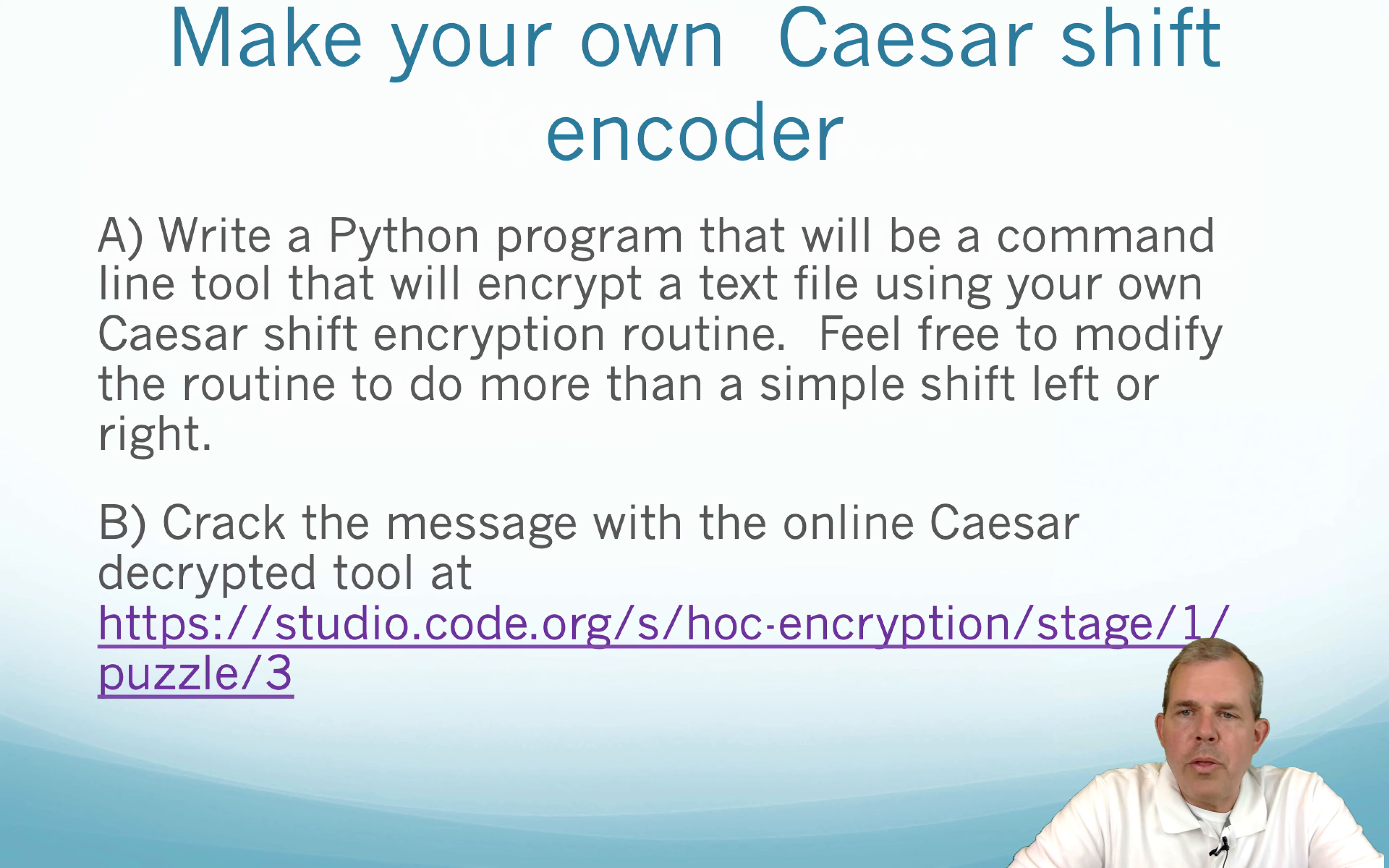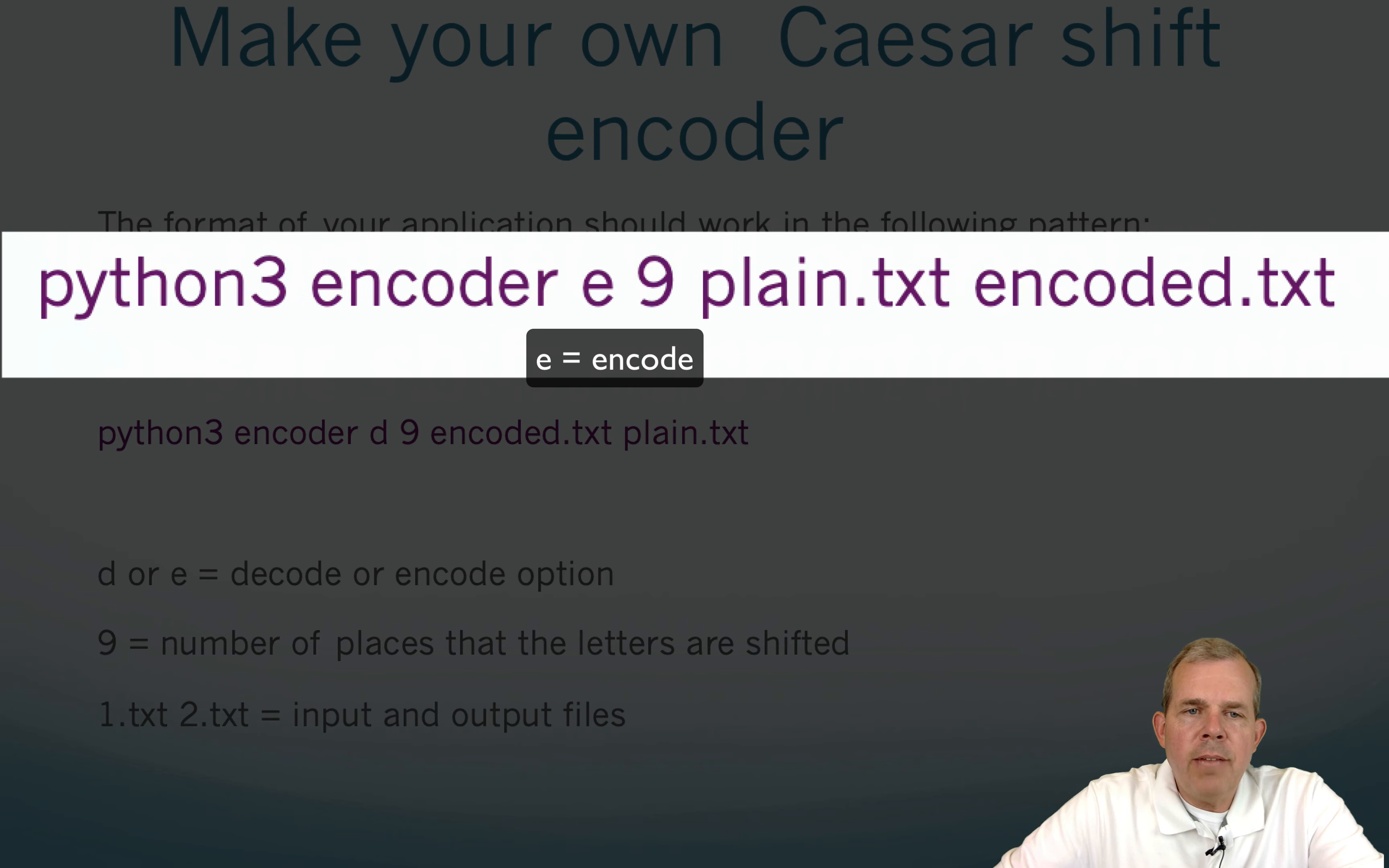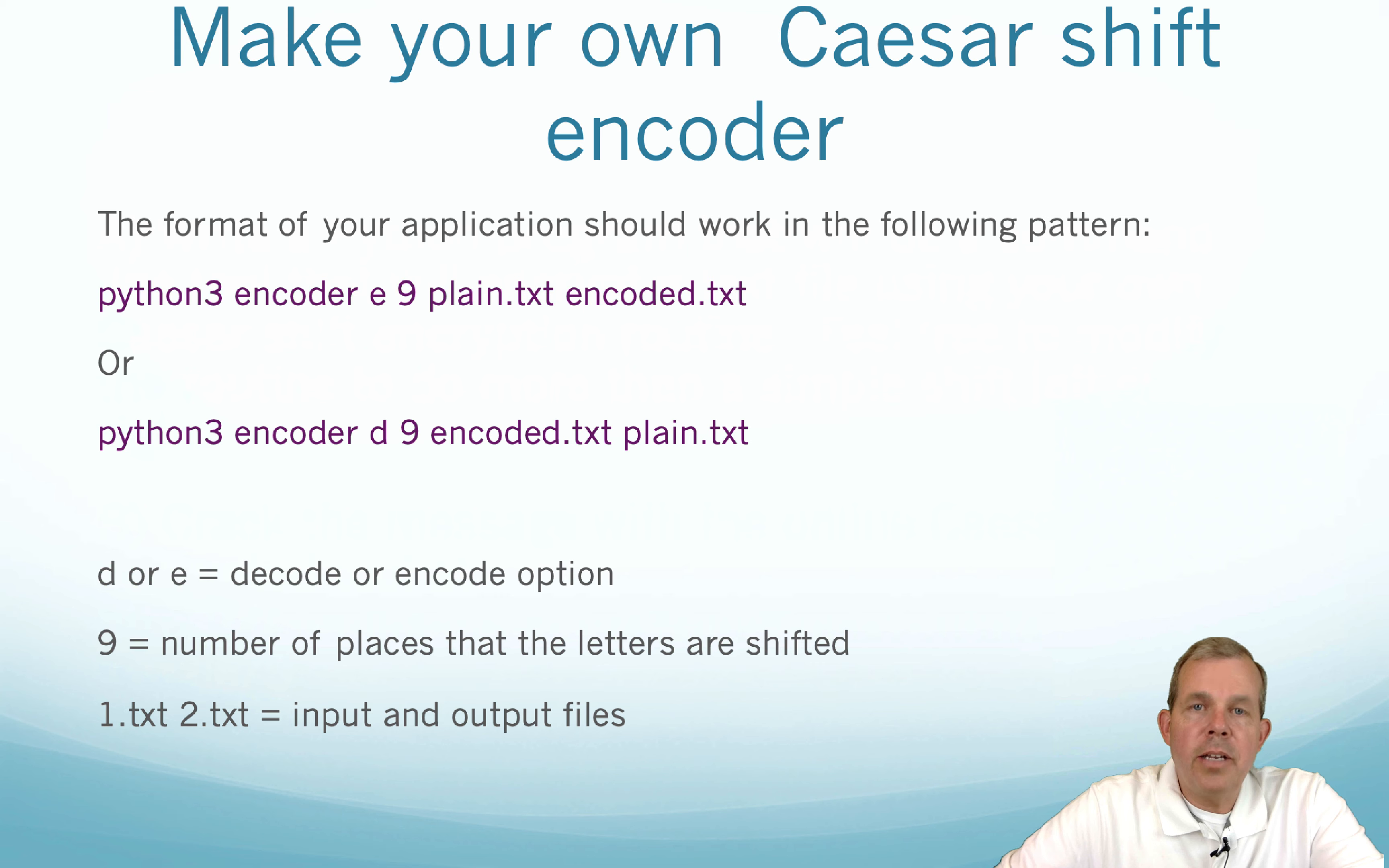So here would be the challenge, to make your own Caesar shift encoder. So let's use Python, write a program that will take a command line that will enter in a free form text entry. And then go ahead and use the modifications, your code that you wrote, and see if it will do an encoded message for an output. Then see if you can take that encoded message and use the same tool that we saw just a few minutes ago at code.org and you can crack your own message. So here's what your program should look like. We should be able to type in the word Python 3 encoder. And then I have the letter E for encrypt. And then I would use the number 9 for the shift. Then I would have a text file for the plain text and then an output file called encoded. And that would allow us to take the message in a text file and create a second text file and print it out. So we have a D for decoding, so we have an encode and a decode operation. And this would be a great operation for working with text files in Python. So I could assign that to you for some homework.